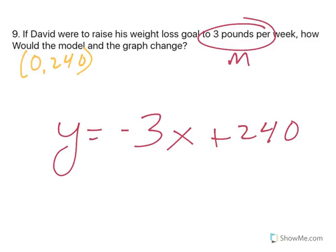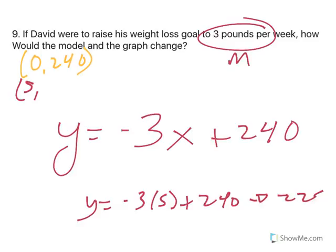But, let's get a couple different points so we can change the graph. After 5 weeks, well, y equals negative 3 times 5 plus 240. That gives me 225. And, at 10 weeks, so y equals negative 3 times 10 plus 240. That gives me 210.